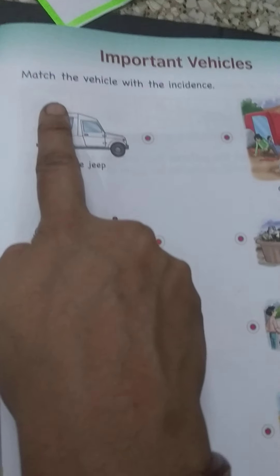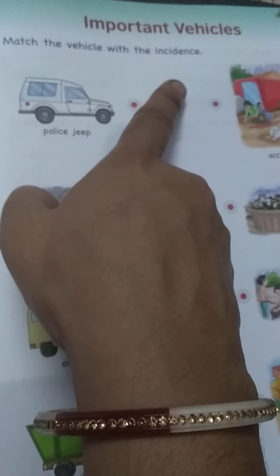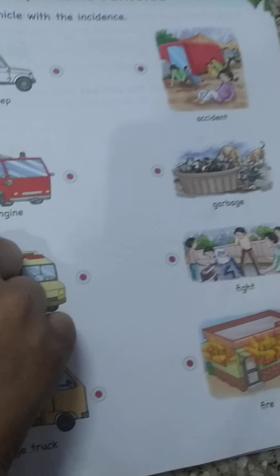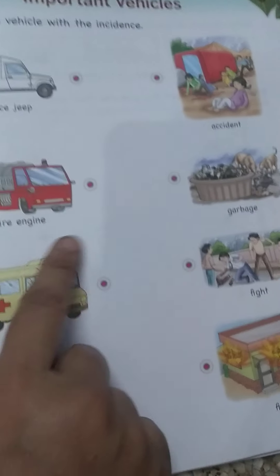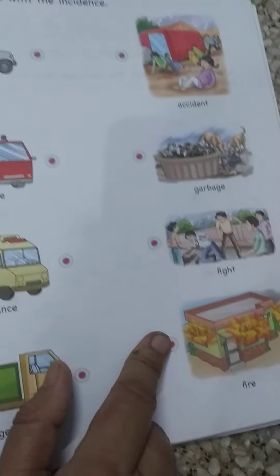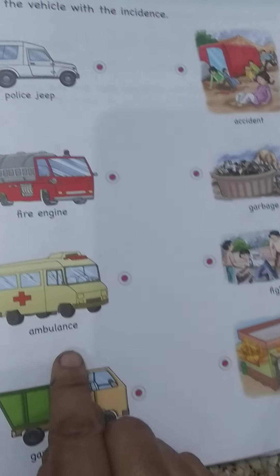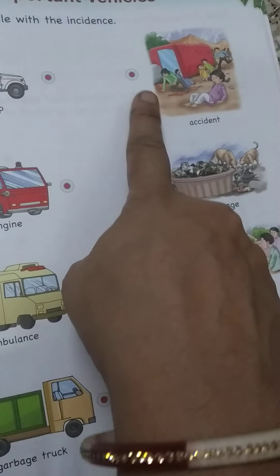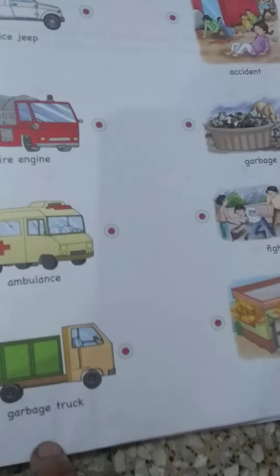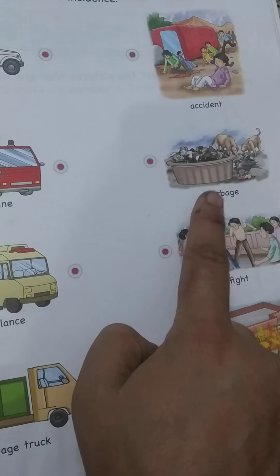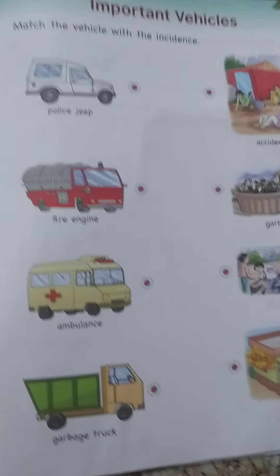And you have to do page number 49 also. See, this is police jeep. Important vehicles — match the vehicle with the incidents. Police van kahan aati hai — jahan fight hota hai. Fire engine kahan aati hai — jahan fire lagti hai. Ambulance where the accident happens. Garbage truck jahan se gandagi uthati hai. So, you have to do page number 49 also.